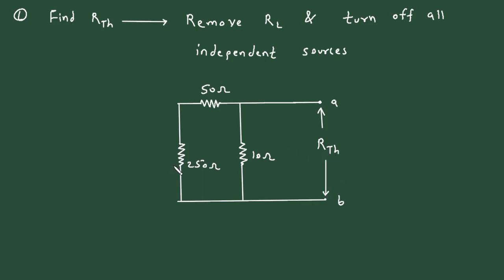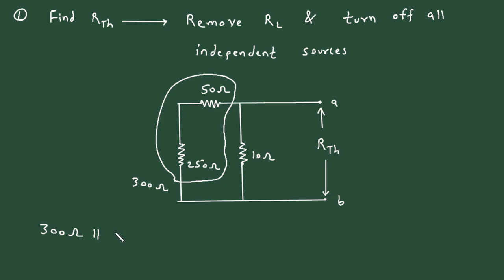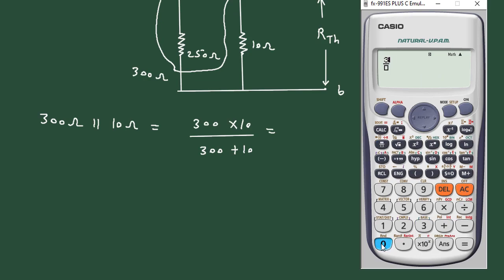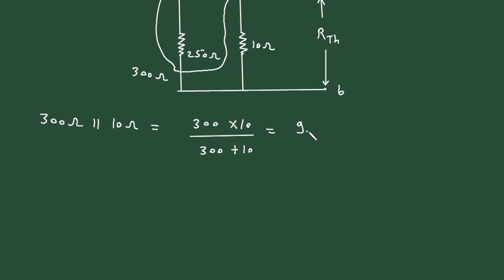We can easily find the value of Rth. The 250 Ω and 50 Ω are connected in series, giving an equivalent resistance of 300 Ω. Now this 300 Ω and 10 Ω are connected in parallel: (300 × 10) / (300 + 10) = 9.677 Ω. So Rth = 9.677 Ω.